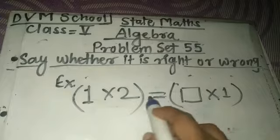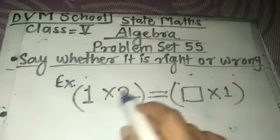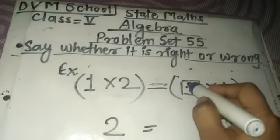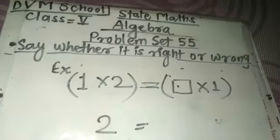It is the equality form, the equal symbol is there. 1×2 is 2. Which number should we give here? Konsa number aap yaha pe lenghe? The both sides will be equal.